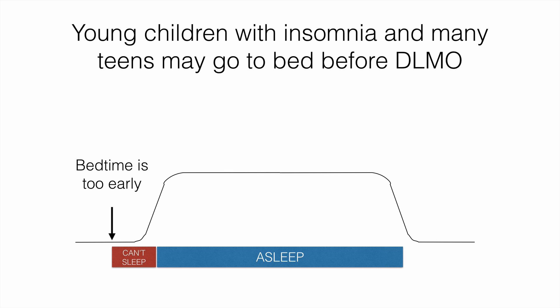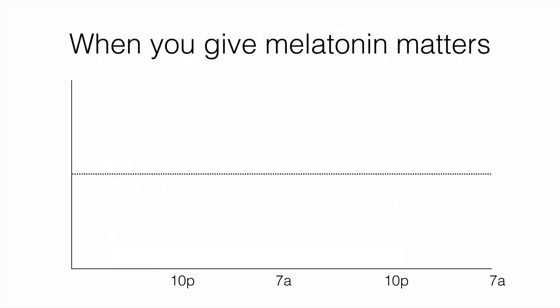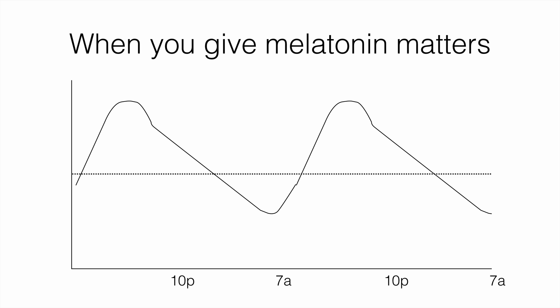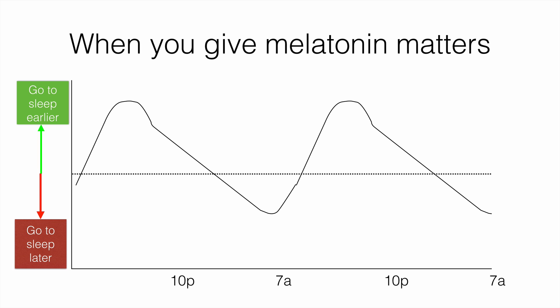It seems really obvious — why not just give melatonin? The tricky thing about melatonin is when you give it matters. This curve is called the melatonin phase response curve. It sounds really confusing and difficult to understand, but essentially, if you give melatonin when the curve is above the dotted line, the effect is that you go to sleep early. If you give it when the curve is below the dotted line, you'll go to sleep later.